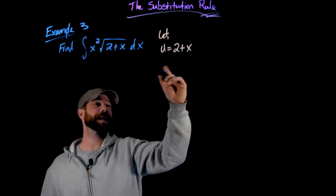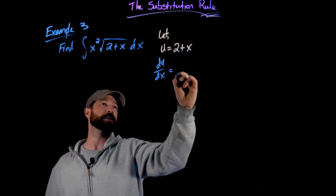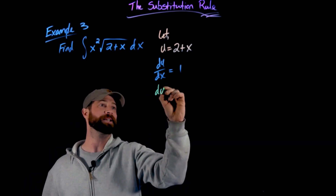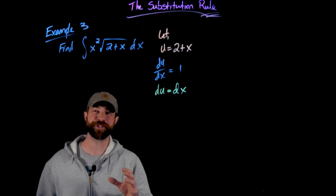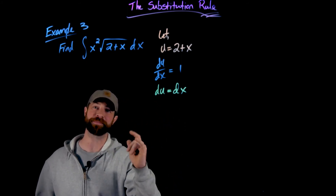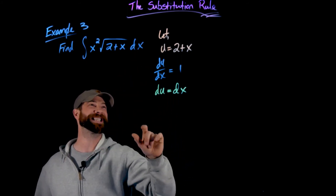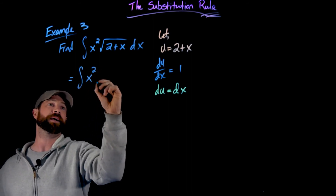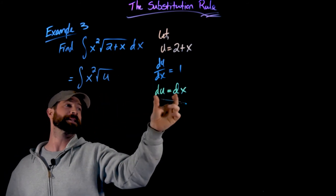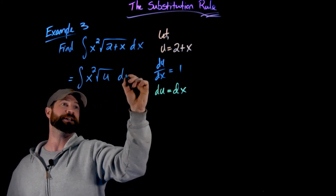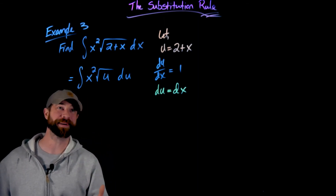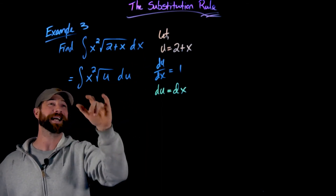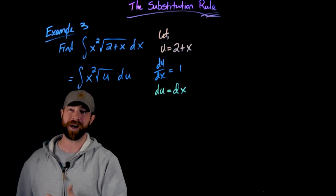Differentiating both sides with respect to x gives du/dx equals 1, so multiplying over the differential gives du equals dx — a straight swap. With u equal to 2 plus x, my integral now has x squared times the square root of u with du in place of dx. However, I'm still in a difficult spot because I have two different variables, x squared and u, but I'm only integrating with respect to one of them.